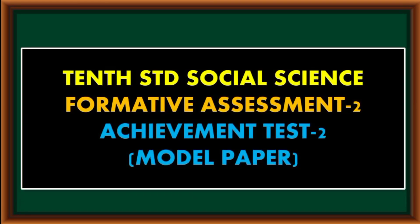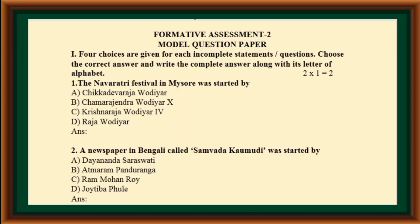10th Standard Social Science formative assessment achievement test model paper. FA2 model question paper: four choices are given for each incomplete statement or question. Choose the correct answer and write the complete answer along with its letter of alphabet.